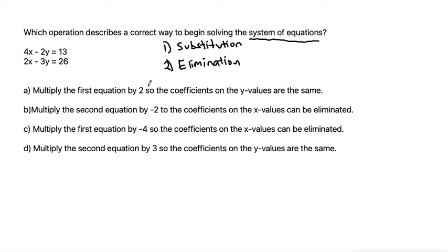We multiply the first equation by 2 so that the coefficients on the y-values are the same. Well, let's check and see if that even works. If we take 2 and we multiply it by the 4x minus 2y is equal to 13, we get 8x minus 2y is equal to 26.